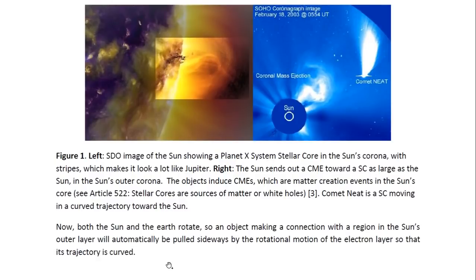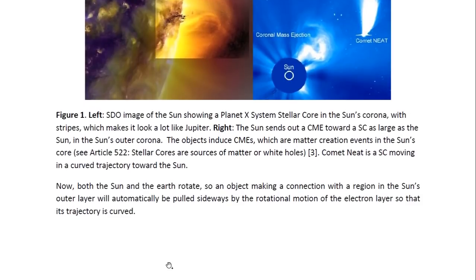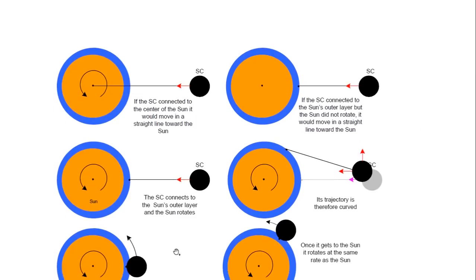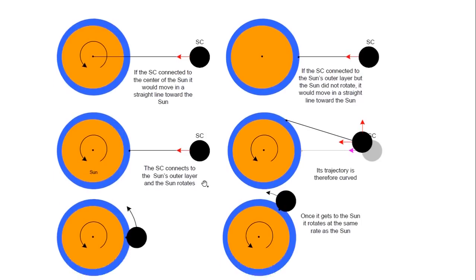Both the Sun and the Earth rotate. So an object making a connection with a region in the Sun's outer layer will automatically be pulled sideways by the rotational motion of that electron layer so that its trajectory is curved. This is illustrated in this diagram. If a stellar core connected to the center of the Sun, we would expect it to come in a straight line. If it connected to the outer layer but the Sun did not rotate, we'd also expect it to move towards that point. But it connects to the outer layer and the Sun rotates, which means this point has rotational motion, which gives the object rotational motion as well, and that means it will follow a curved path.